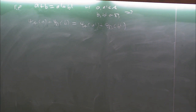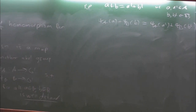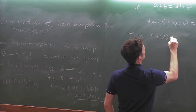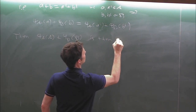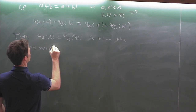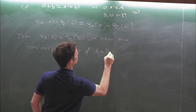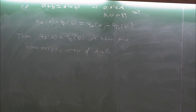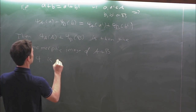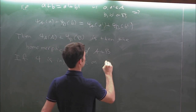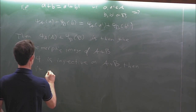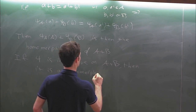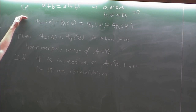The map is defined coordinate-wise, and we get a homomorphic image psi_A(A) plus psi_B(B). If it happens that psi is injective on the whole sum set, then we're going to say that it's an isomorphism.